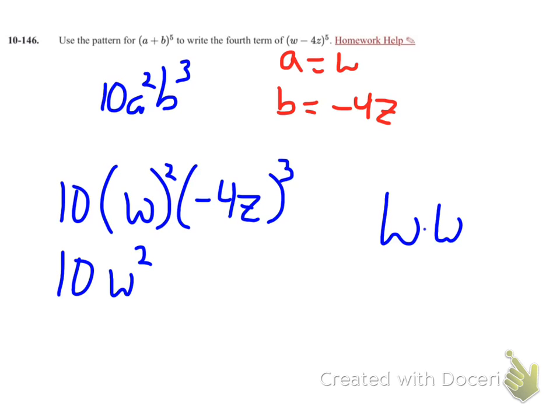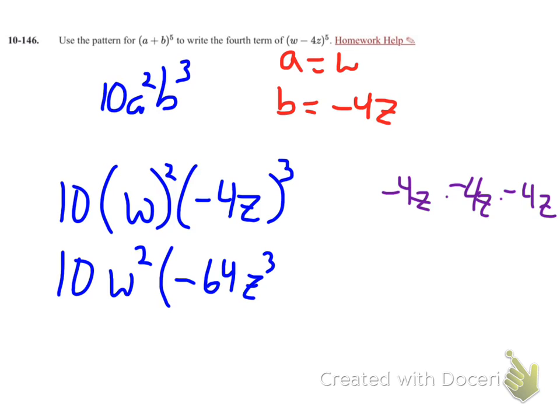But the next one is important. Because when I have negative 4z to the third power, that is the same thing as negative 4z times negative 4z times negative 4z, which makes a negative 64z to the third.